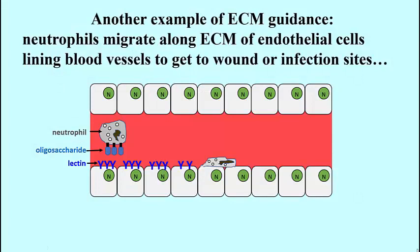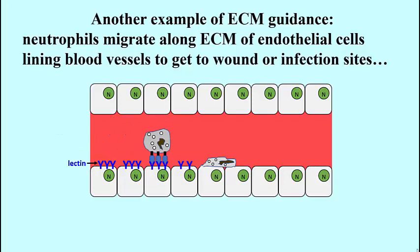Here's another example of extracellular matrix guidance of cell movements. This one occurs in the blood. Neutrophils are white blood cells that migrate between the endothelial cells lining blood vessels to move towards a wound or an infection site. These neutrophils, which have specific oligosaccharides in their glycoproteins on their surfaces, recognize receptors called lectins. Lectins are proteins that recognize and bind to specific sugar residues. The lectins on the endothelial cells can bind to the sugars on the neutrophil surface, attaching the neutrophil to the endothelial cell, which is then able to migrate along the endothelial cell.